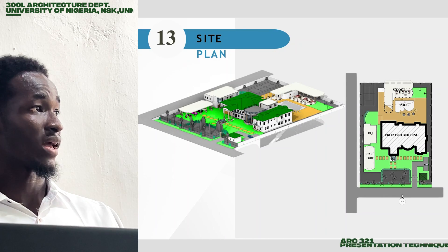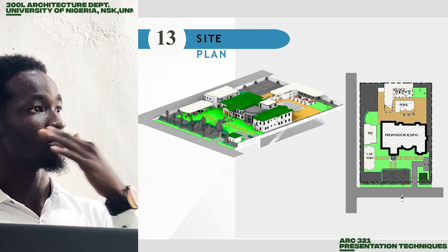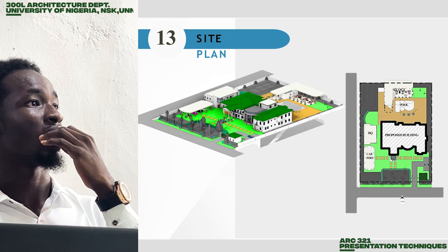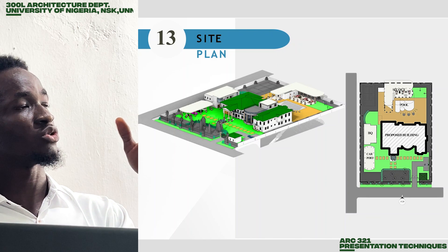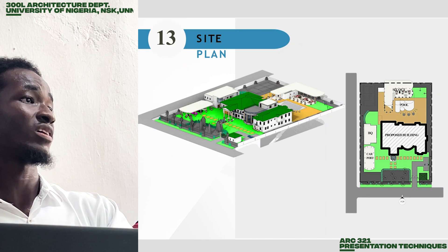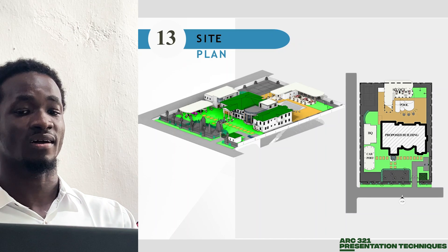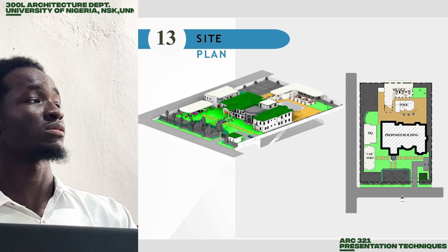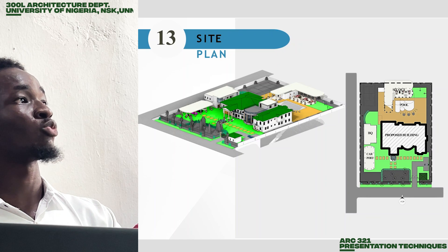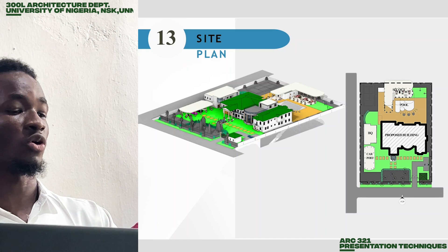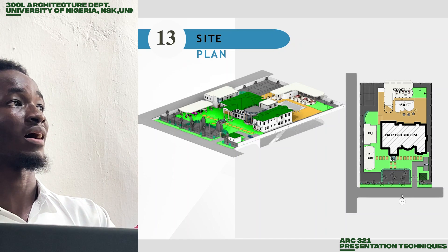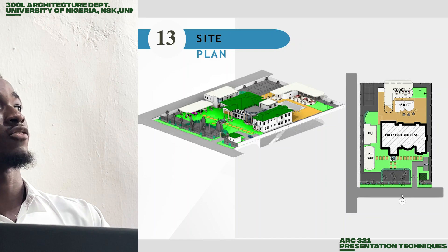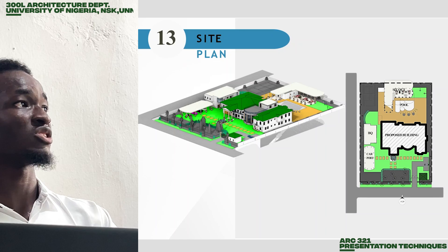On the site plan, we have the proposed building from which you access the entrance into the building. Behind the building we have the carport, since this is a villa. The building is designed to provide space for multiple people who could live here, with enough parking spaces provided.